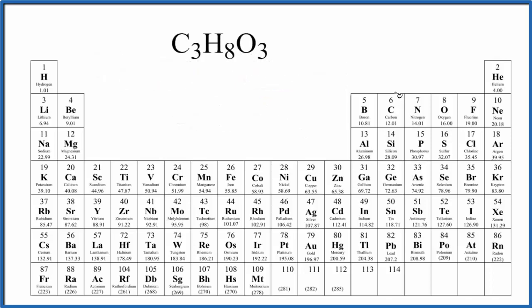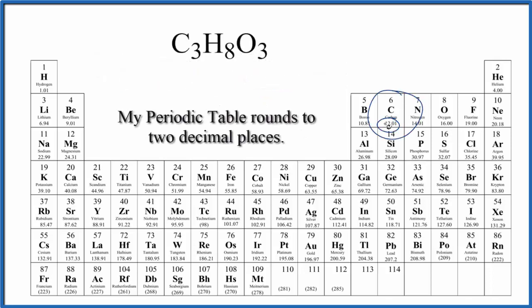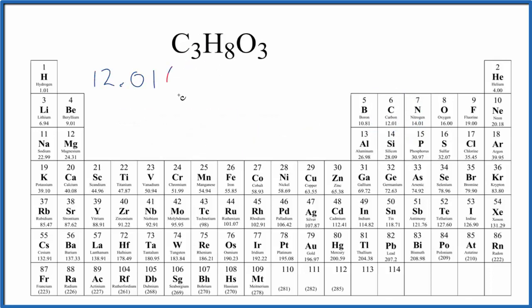We go to the periodic table and find carbon. That's 12.01, and the units are grams per mole. I won't write that each time. There are three carbon atoms, so we'll put a three there and multiply this by three.